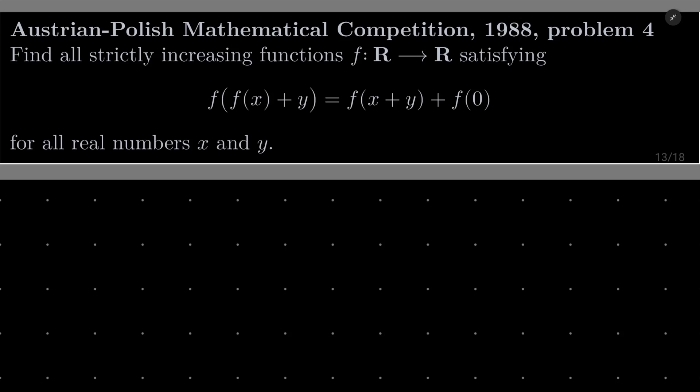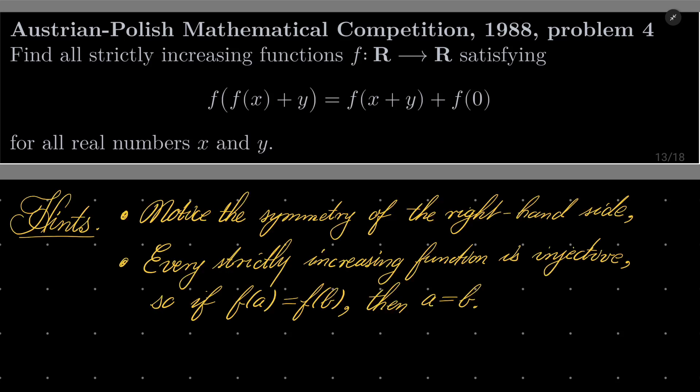It's a relatively easy problem, here are my hints. First, notice the symmetry of the right hand side with respect to x and y, and keep in mind that every strictly increasing function is injective, so if we have the same value of two arguments, these arguments must be actually the same.